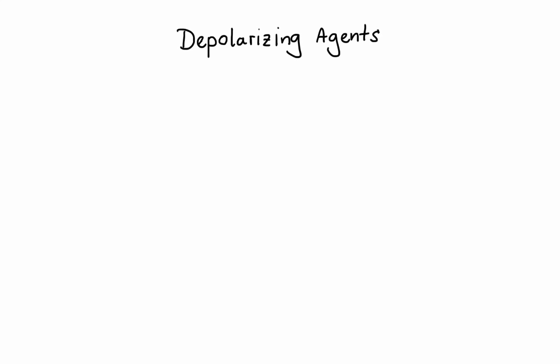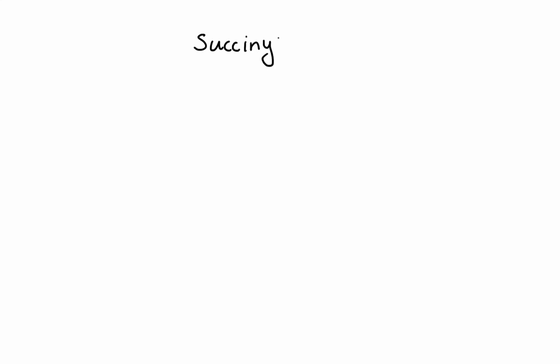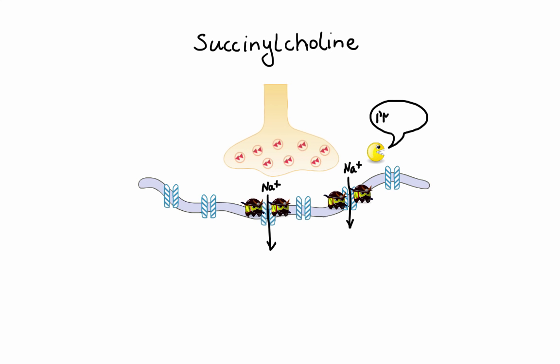Now let's move on to depolarizing agents. Depolarizing agents act as acetylcholine receptor agonists — they mimic acetylcholine, but are much more resistant to degradation by acetylcholinesterase, and therefore produce persistent depolarization. The only depolarizing agent still used in clinical practice is succinylcholine. Succinylcholine binds to the nicotinic receptor and, unlike non-depolarizing agents, actually causes the sodium channel to open, resulting in membrane depolarization. Because succinylcholine is resistant to acetylcholinesterase, it causes prolonged depolarization, leading to transient fasciculations and finally flaccid paralysis — referred to as phase 1 block.